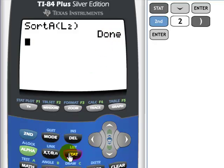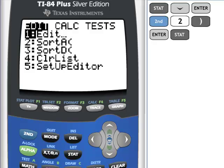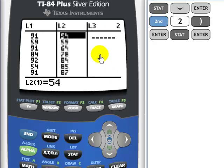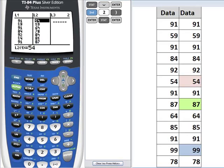I'm going to go to STAT. I'm going to go into Enter. And now, you can see the data. It has been sorted. When I do my visual inspection of my original data set, here I can see that 54 is the smallest number, 99 is the largest number, and 87 is the middle number.